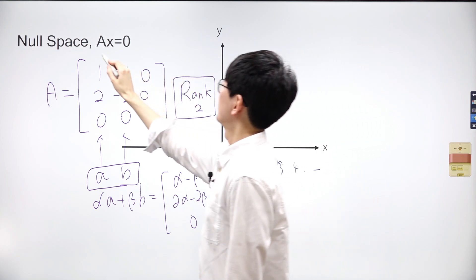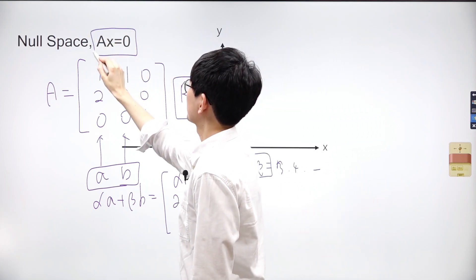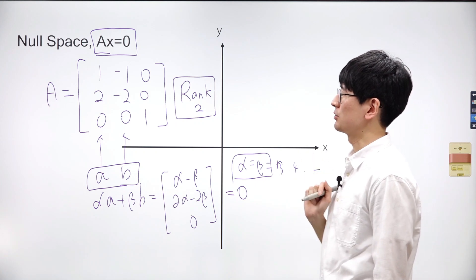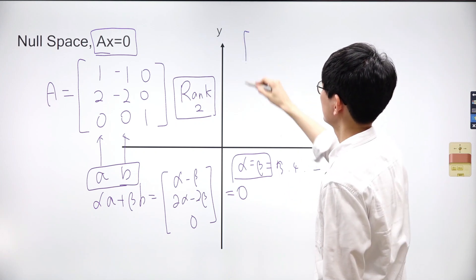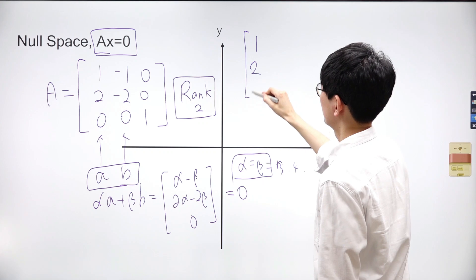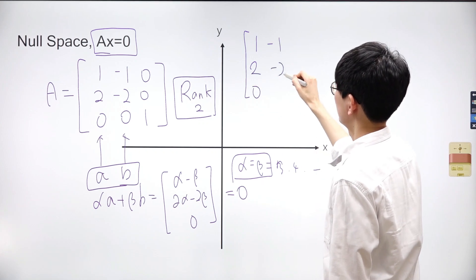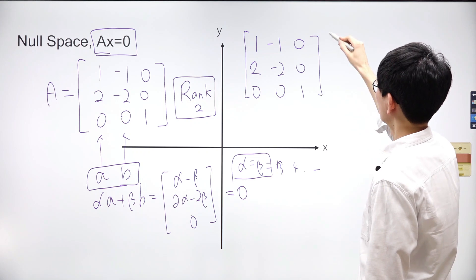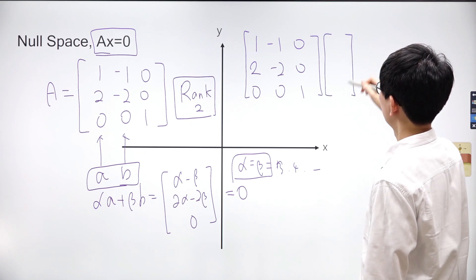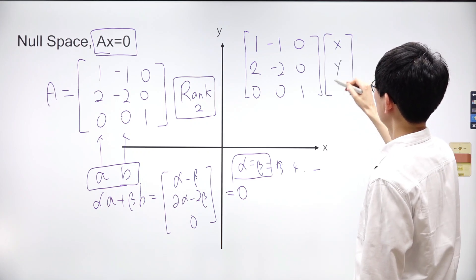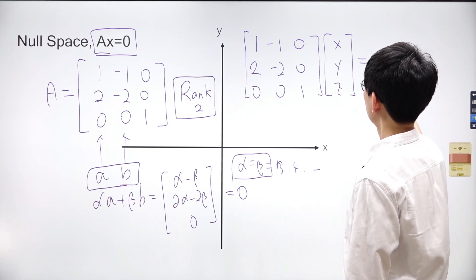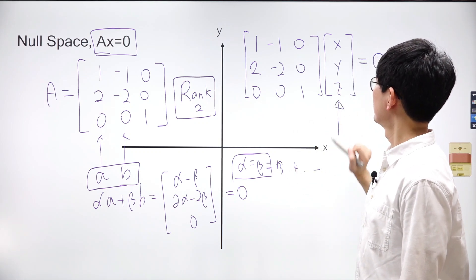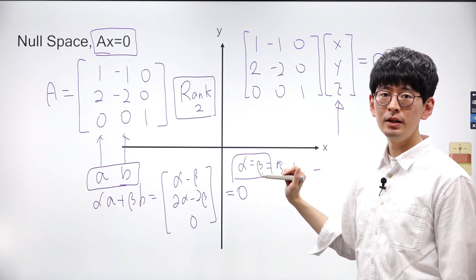When the rank of the matrix decreases, it implies the existence of a vector that, when multiplied with the matrix, produces a result of 0. In simpler terms, there's a vector that when multiplied with matrix A yields 0. Before delving deeper into this vector, we need to understand how matrix and vector multiplication operates.